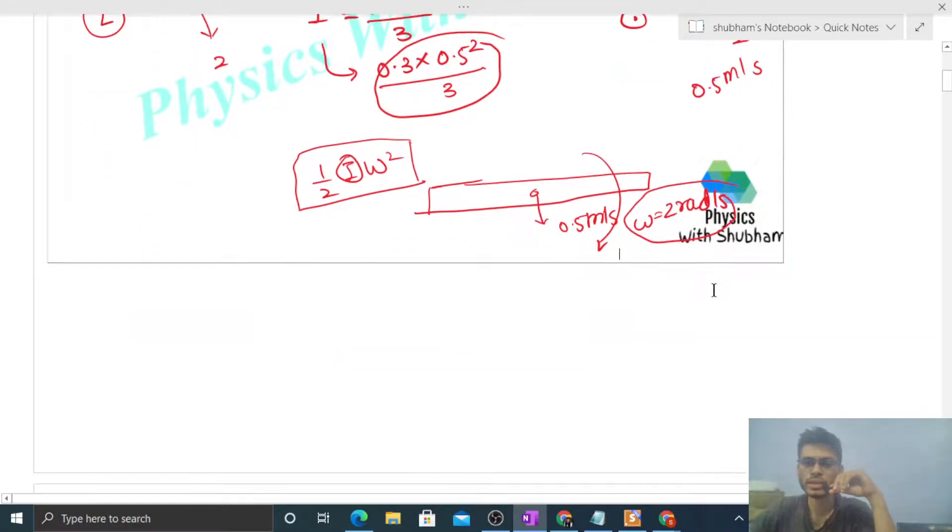About center of mass, that will be 2 radians per second. Total kinetic energy is translational kinetic energy plus rotational kinetic energy. Translational kinetic energy will be half of m into velocity of center of mass squared, plus rotational kinetic energy half of I about center of mass into omega squared.